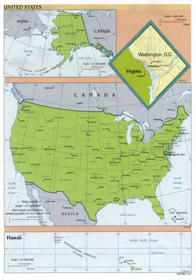Political divisions, also referred to as administrative divisions of the United States, are the various recognized governing entities that together form the United States—states, territories, the District of Columbia, and Indian reservations.